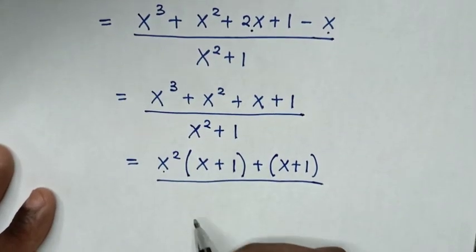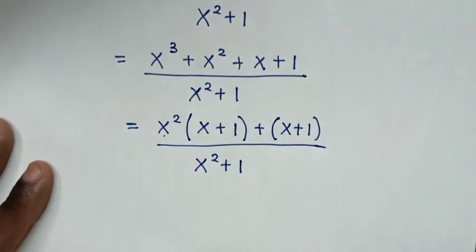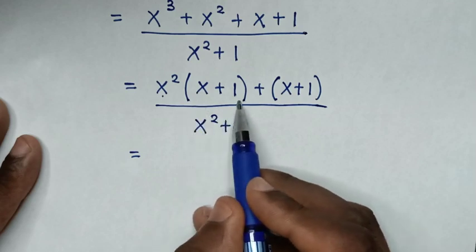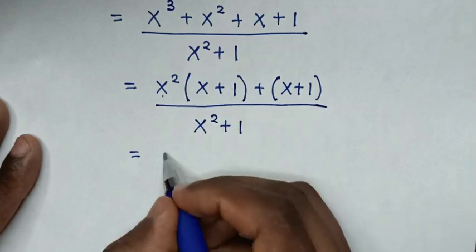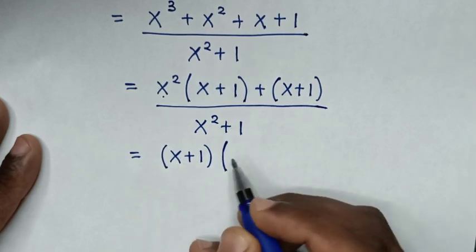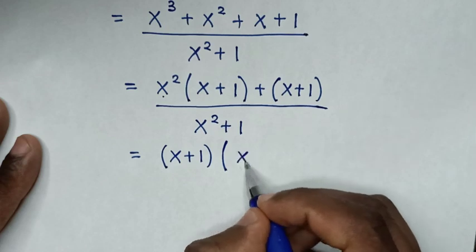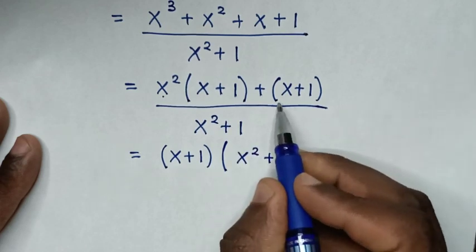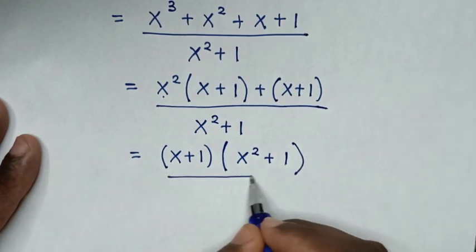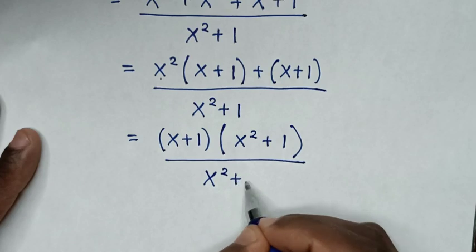Then it will be equal to: in here x plus 1 is common, so we take x plus 1 out of the bracket. Then this divided by x square is 1, bracket, over x square plus 1.